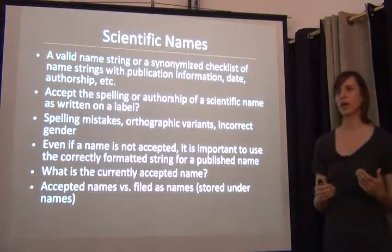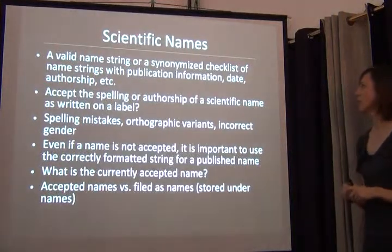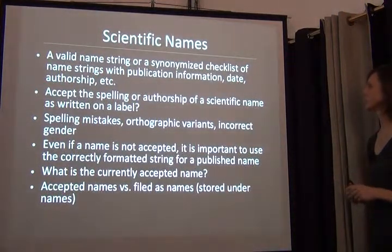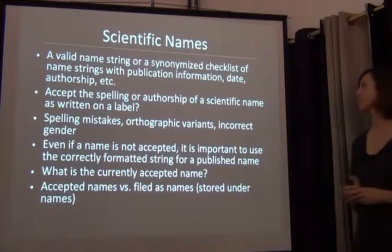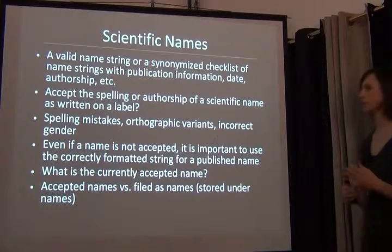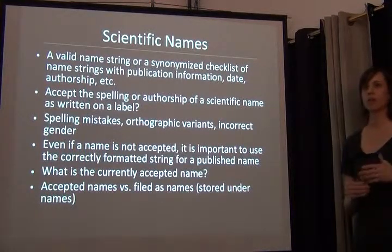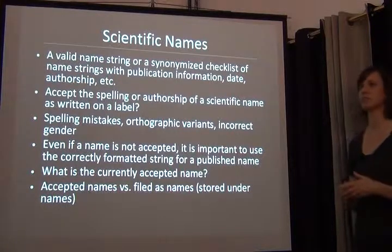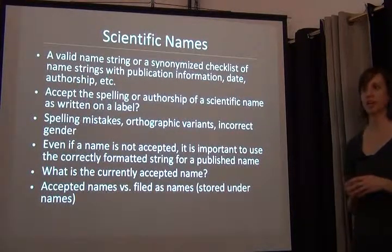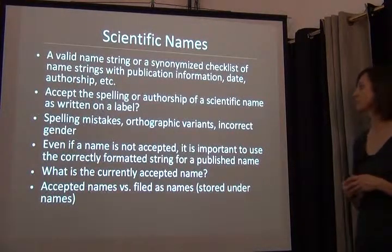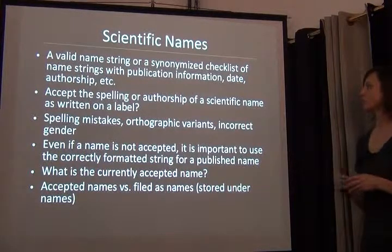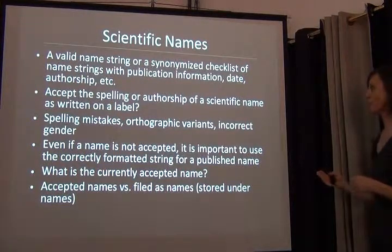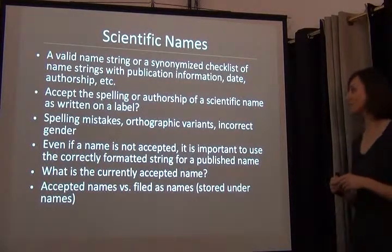So when you're talking about an authority file, you might want a synonymized checklist of name strings that includes publication information, date, and authorship — something that can help you with homonyms to distinguish which name is the right one to use.